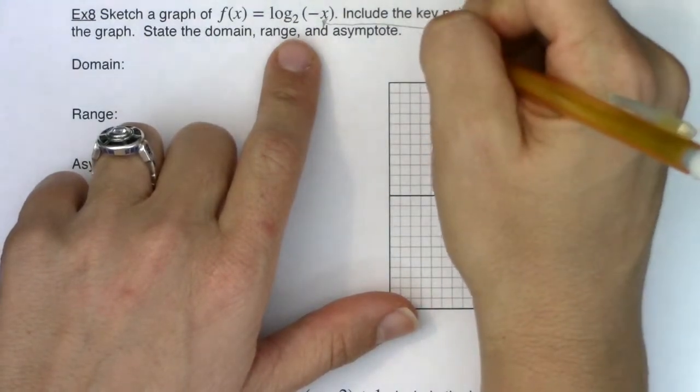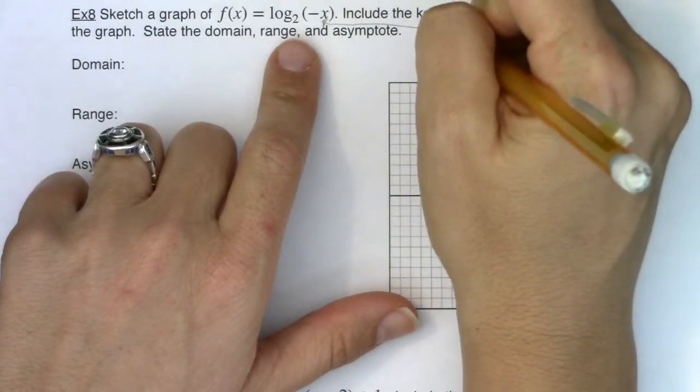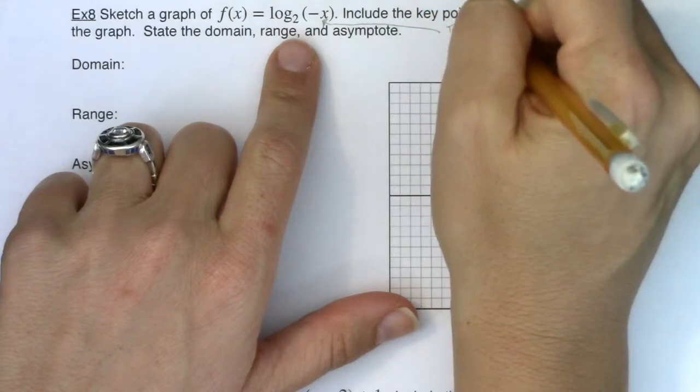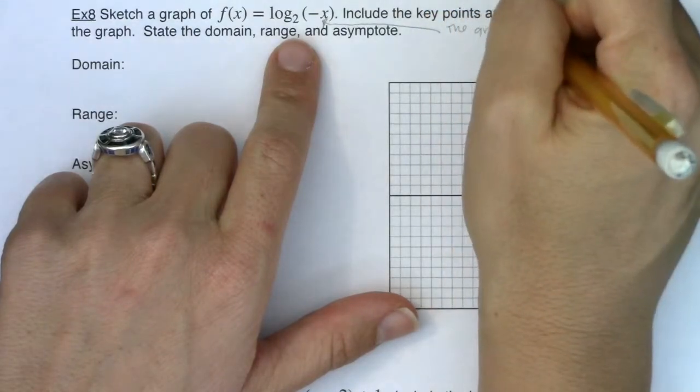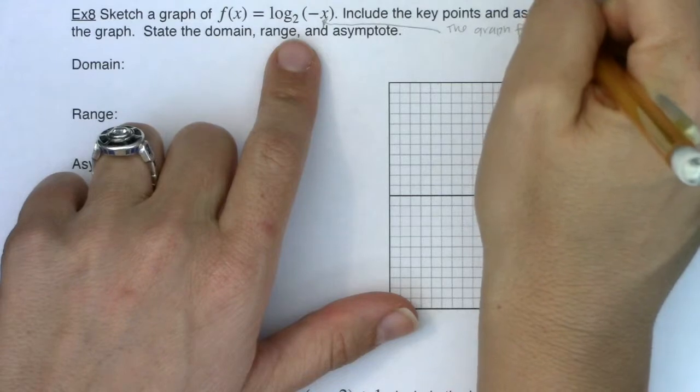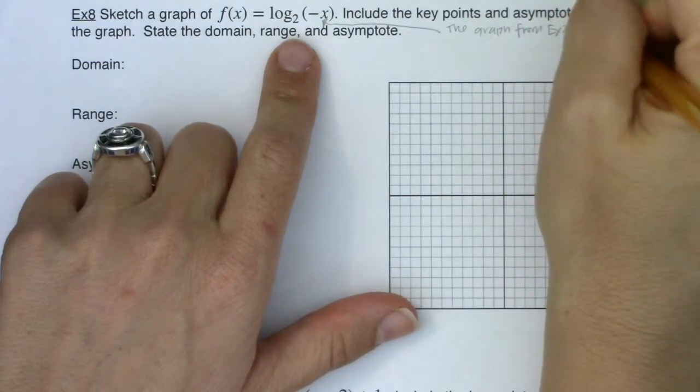So we will say here the graph from example 3 has been reflected across the y-axis.